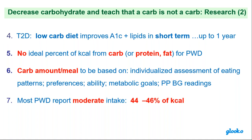So how do we determine Martha's carb budget — the amount of carb she can, quote, 'get away with' at every meal while still meeting a target post-prandial blood sugar of less than 180? Her carb budget has to be based on an individualized assessment of her eating patterns and preferences, her ability, her metabolic goals, and her blood glucose readings. All of that plays into account.